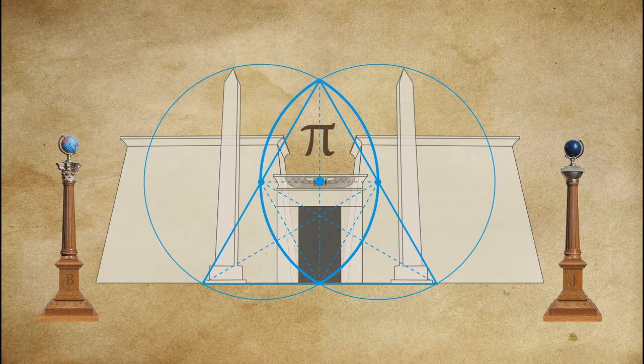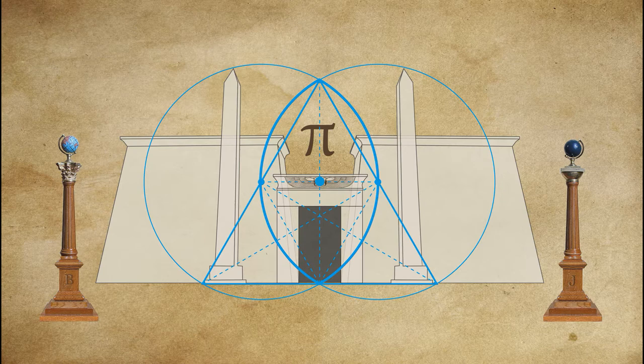The dot at the very center of those two circles represents the origin point of all things — the beginning of creation, the Big Bang. The two large circles represent the first two primordial states that came out of that original unity: energy and matter, light and darkness, feminine and masculine — the mother and father of creation.